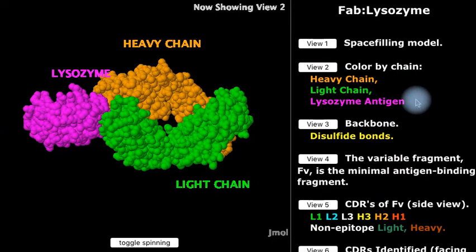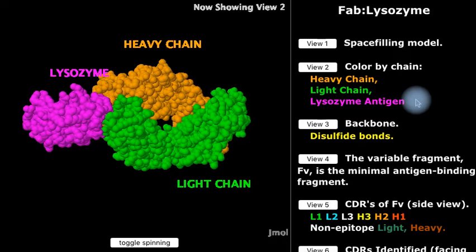Here we have an antigen binding fragment of antibody, FAB, made up of an entire light chain and half of a heavy chain. And these are bound to the protein antigen lysozyme.